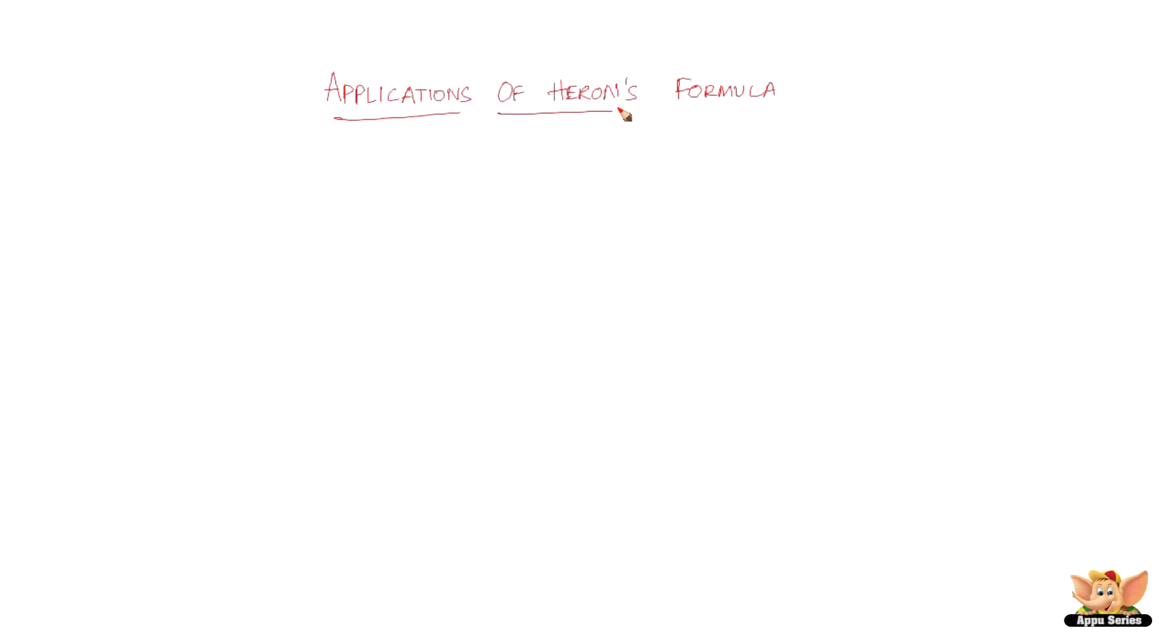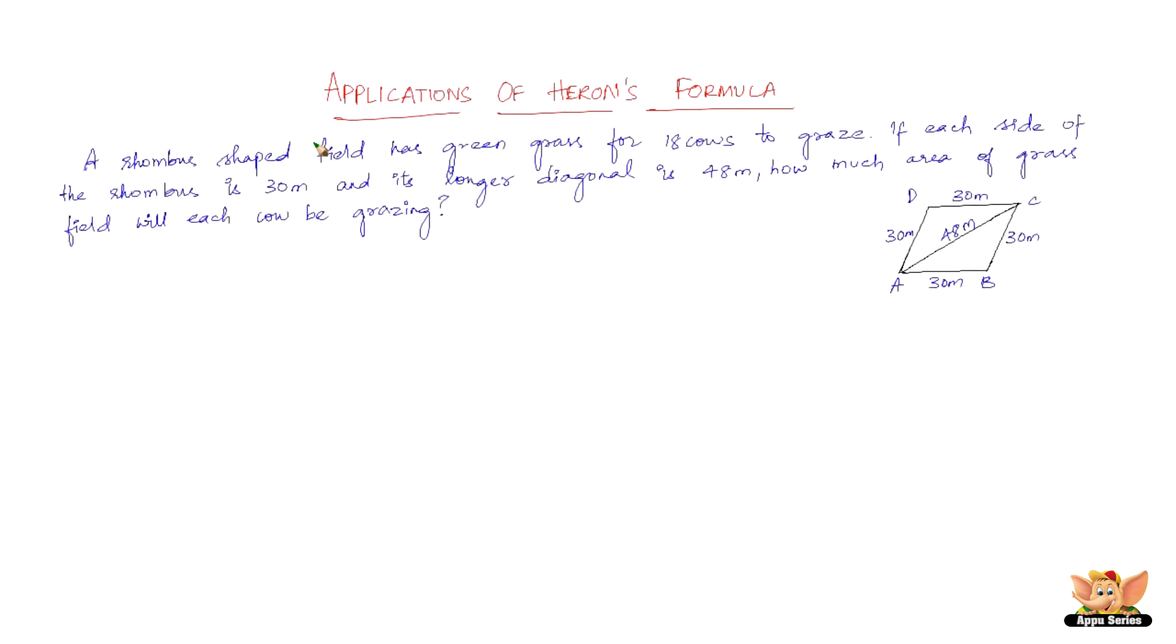In this video let us continue problems on applications of Heron's formula. Here the question goes like this: A rhombus shaped field has green grass for 18 cows to graze. If each side of the rhombus is 30 meters and its longer diagonal is 48 meters, how much area of grass field will each cow be grazing?